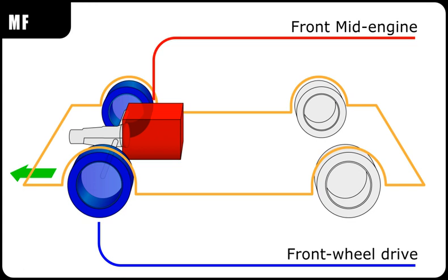In automotive design, a front mid-engine, front-wheel drive layout, sometimes called FMF or just MF, is one in which the front road wheels are driven by an internal combustion engine placed just behind them, in front of the passenger compartment.